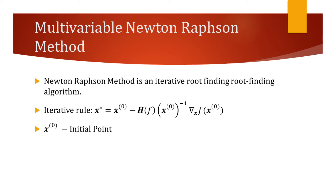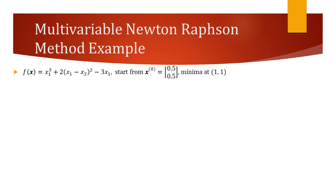Let's now do an example where we find the local minimum of a multivariable function using this method. Consider the function at the top of the slide. The minimum of this function is at (1, 1). We will start the approximation with an initial point of (0.5, 0.5), and see if we can get a new point that's closer to the minima.